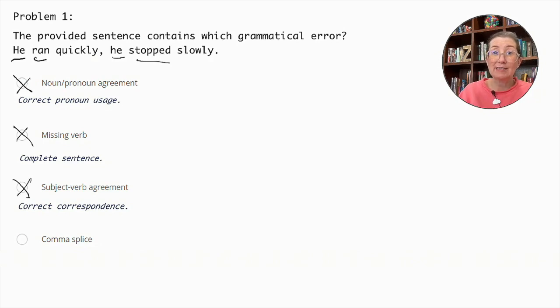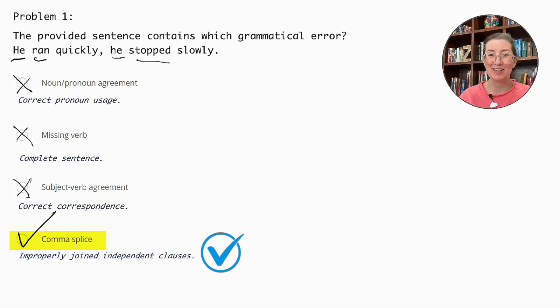The correct answer is comma splice, which occurs when two independent clauses are joined with a comma without an appropriate conjunction or punctuation. In this sentence, 'he ran quickly' and 'he stopped slowly' are independent clauses improperly connected by a comma.